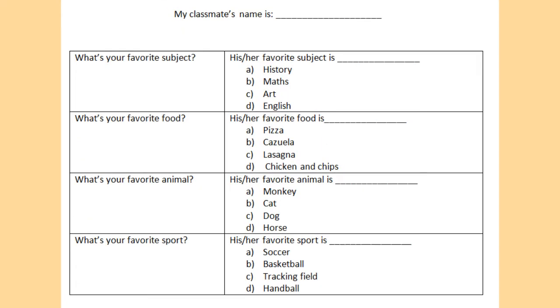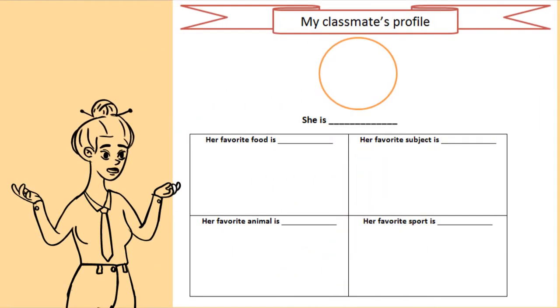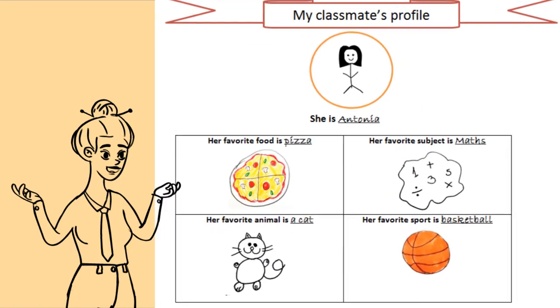Students with special needs work better when they are given options. So, this chart has four alternatives for each of the questions. After they complete the information from the previous chart, they will be provided with a profile, and they need to write and draw their classmate's answers.